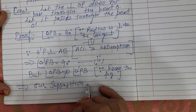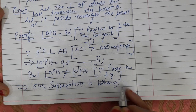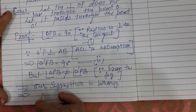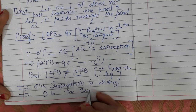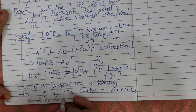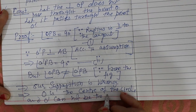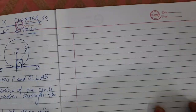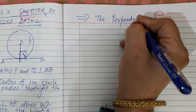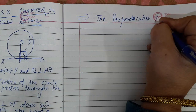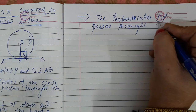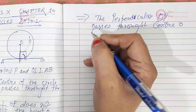Therefore our supposition is wrong. What we supposed was not correct. This means what was given was correct. Therefore O is the center of the circle and O' cannot be the center. Since O' cannot be the center, therefore the perpendicular OP passes through the center O.